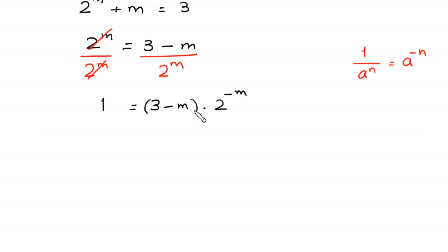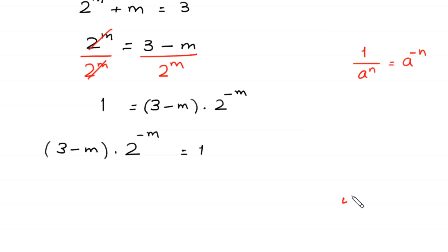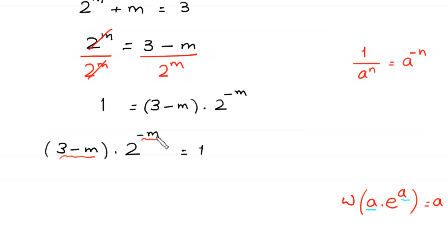We rearrange so that 3 minus m times 2 to the power negative m is equal to 1. We want to use the Lambert W function, where W of a times e to the power a equals a. To use it, we need the same expression in both positions. Since we have negative m here and 3 minus m there, we multiply both sides by 2 to the power 3.